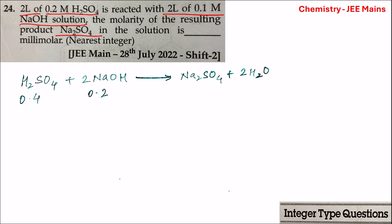Molarity multiplied by volume gives the number of moles. Moles of H₂SO₄ will be equal to molarity of H₂SO₄, that is 0.2, multiplied by volume of H₂SO₄, that is 2 liters. This is equal to 0.4 moles. So initially, 0.4 moles of H₂SO₄ is present.